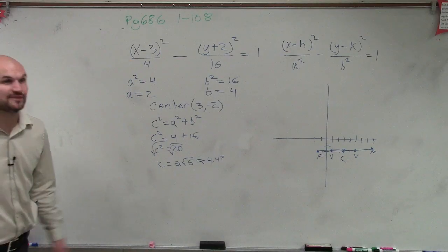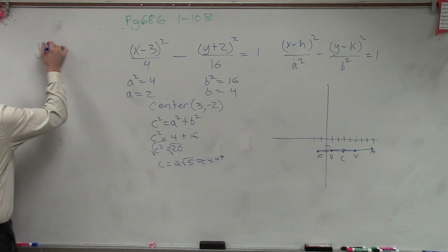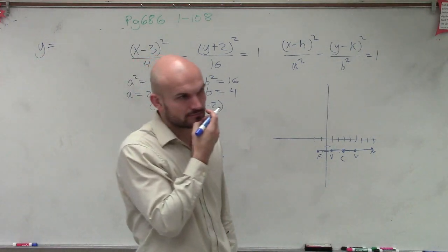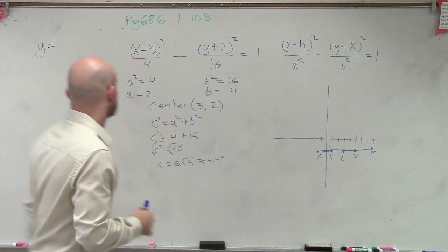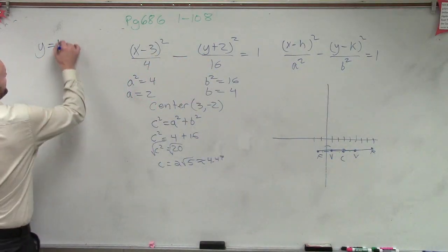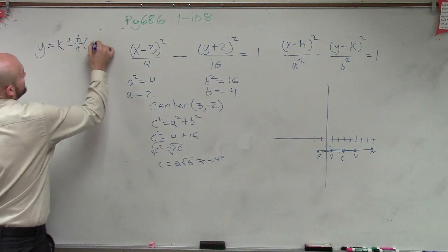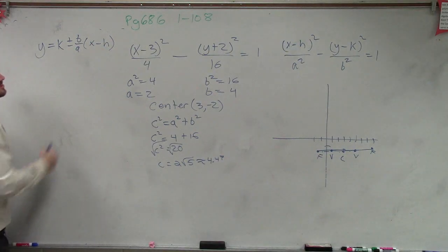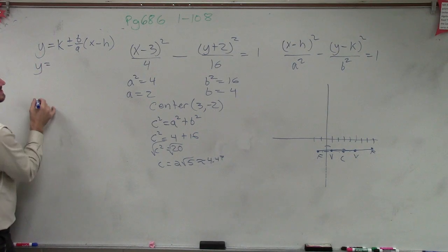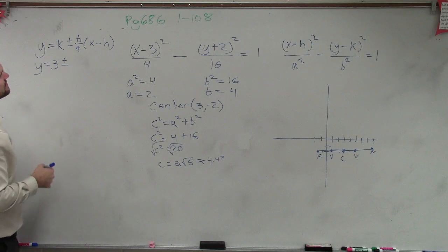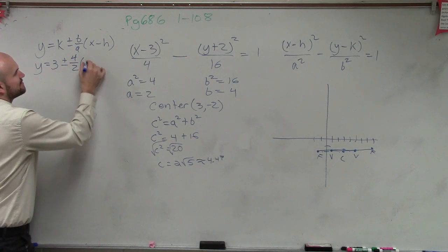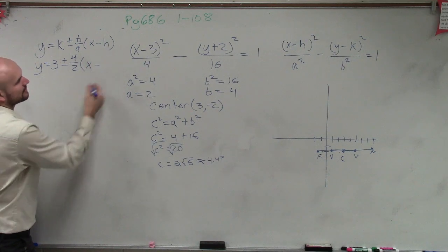Now we need to figure out the asymptotes. Remember, the asymptotes take the form — since this is horizontal — y equals k plus or minus b over a times (x minus h). So we know our k and our h and our a and our b. Therefore, y equals k, which is negative 2, plus or minus our b, which is 4, over a, which is 2, times (x minus h), which is 3.